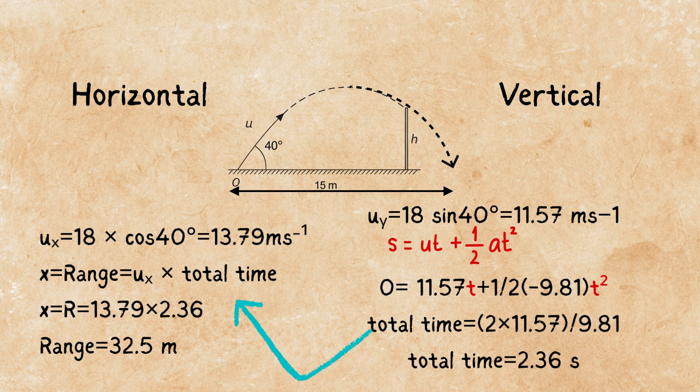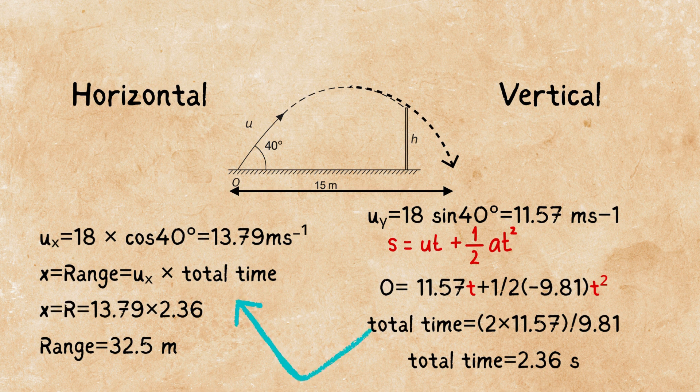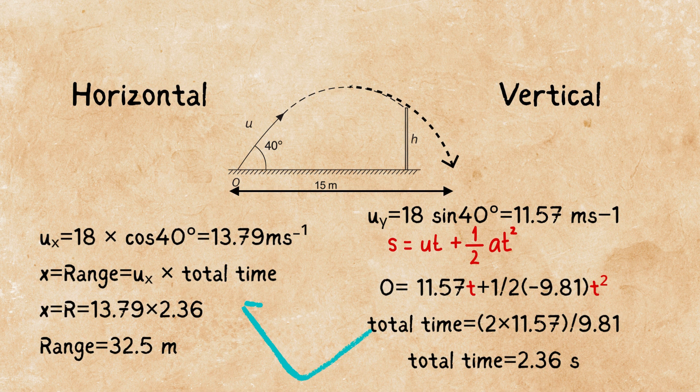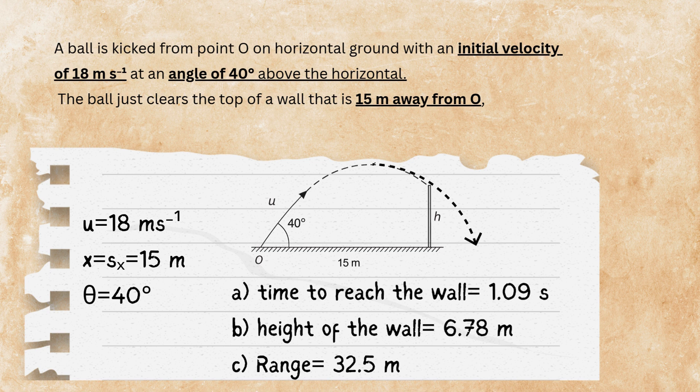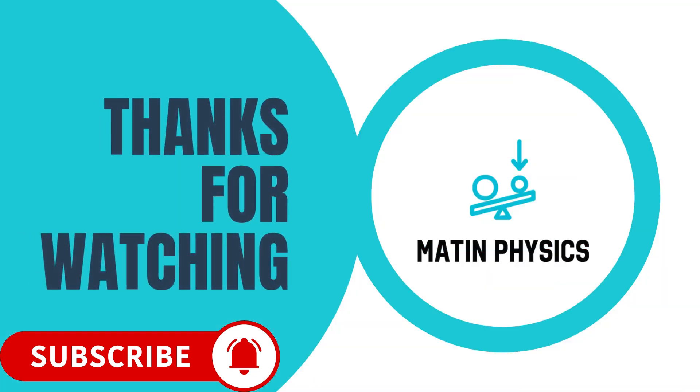Now, I have to go back to my horizontal equations, which was only one. X equals UX times T. The time here is 2.36. The initial velocity in X direction was 13.79. And here we go. We can find the range, which is 32.5 meters. We answered these long questions. I hope you liked it. And if you are still awake, hit the like button and subscribe to the channel. See you in the next one.